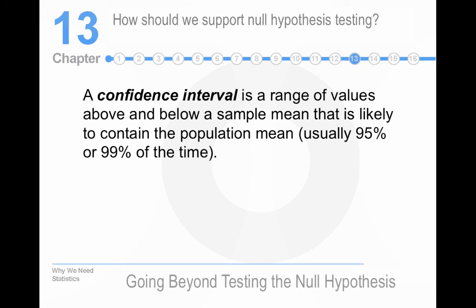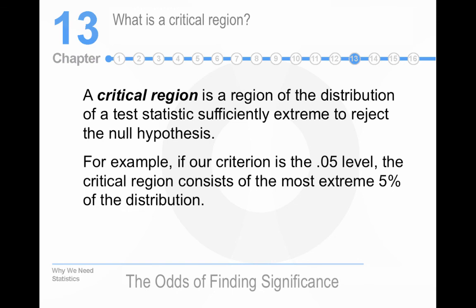So, yeah, so those are valuable, too. So, a critical region is the region of the distribution of a test statistic sufficiently extreme to reject the null hypothesis.